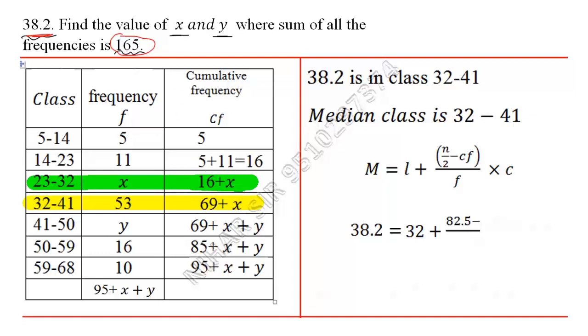Make sure that you don't consider it 69 plus x, always it is 16 plus x upon f, that is 53, the frequency of median class, into c, the class length, 14 minus 5, which is 9.